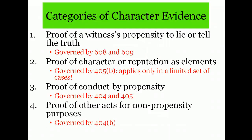So we have four categories of character evidence. We've already done impeachment, and we'll treat that as impeachment rather than character evidence. We'll talk about Category 2 — proof of character as an element, governed by Rule 405b — in class, as it is a small category. We'll spend most of our time on Rules 404a and 404b, which cover the use of conduct to prove propensity (Category 3) and the use of conduct for non-propensity purposes (Category 4).